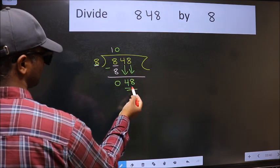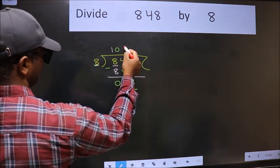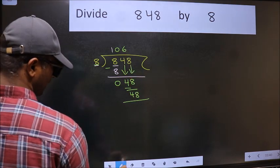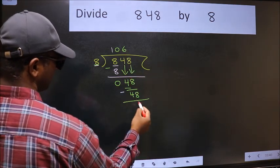Now 48. When do we get 48 in the 8 table? 8 times 6 is 48. Now we should subtract. We get 0.